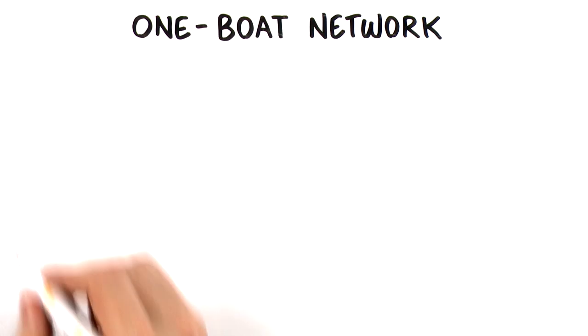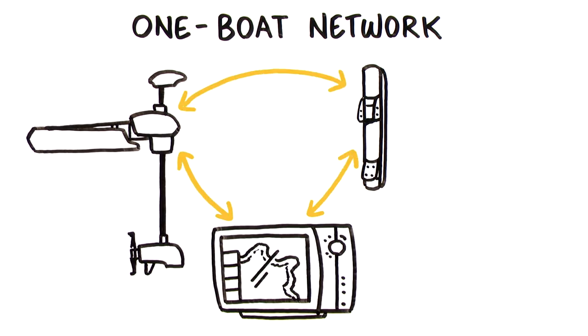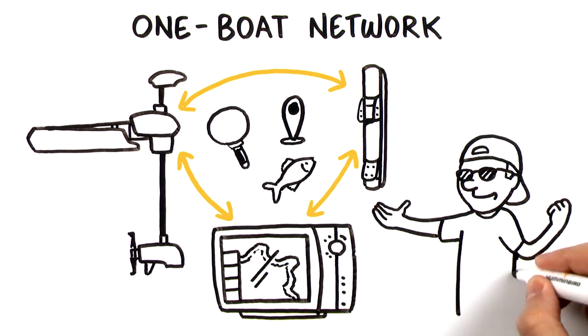The One Boat Network is made up of Minn Kota and Humminbird products that communicate with each other and share data to help you find, stay on, and catch more fish.